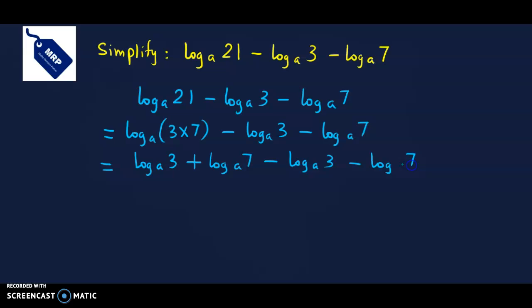So if you observe, log 3 and minus log 3 cancel out, similarly log 7 and minus log 7 also cancel out. So our final answer is 0.